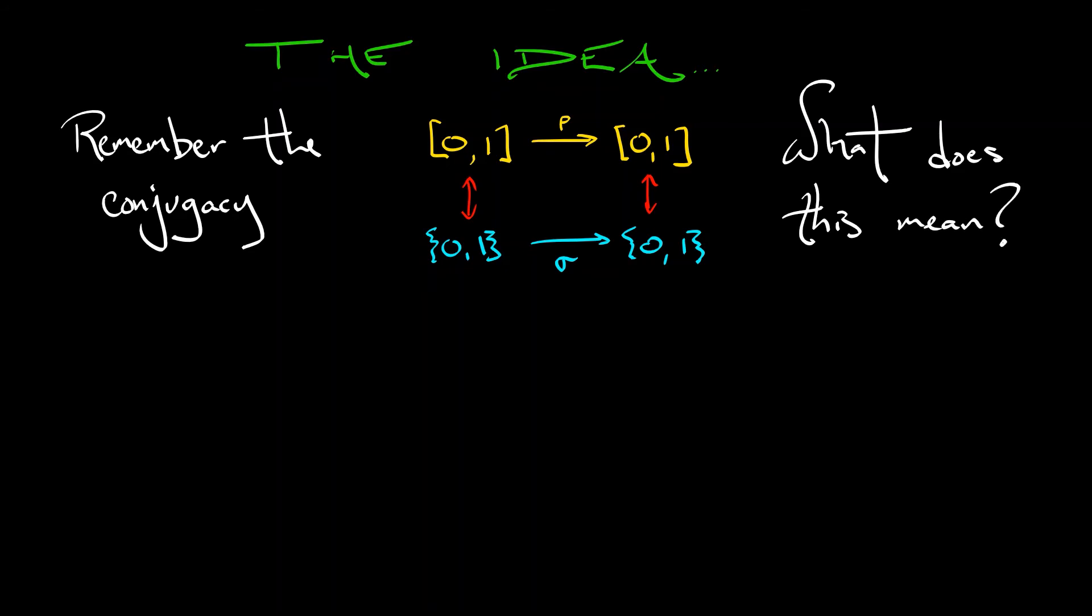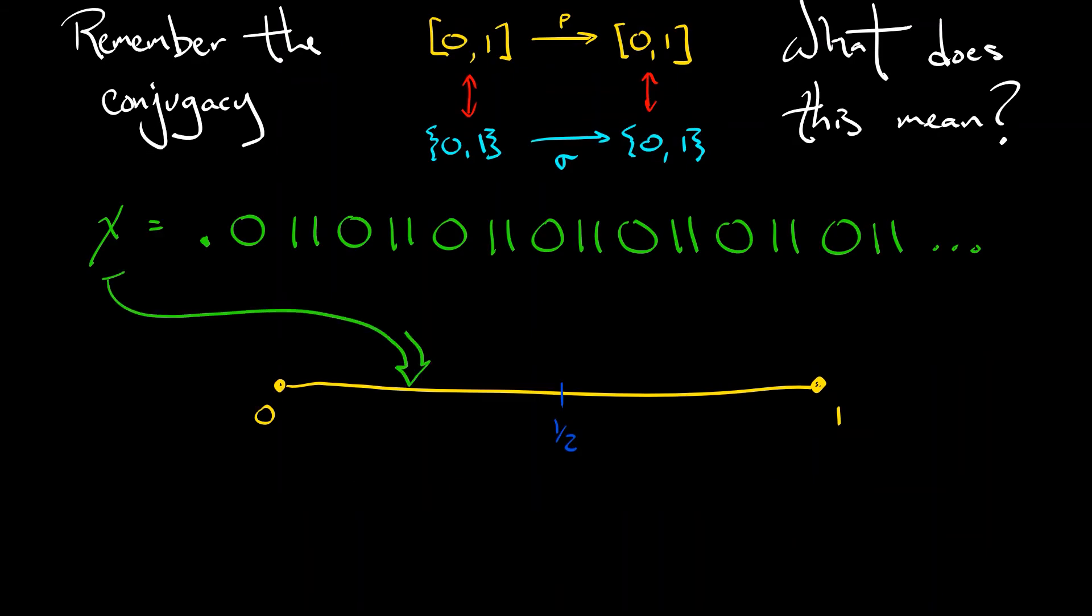If we're given some x in the interval, it has a binary decimal expansion. Let's say I just write out some sequence of zeros and ones. Then that first digit is telling you which side of the interval you're on. Are you on the left-hand side or the right-hand side? Remember how binary decimals work.